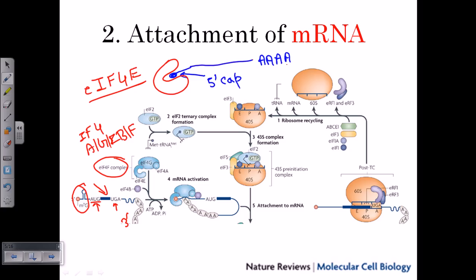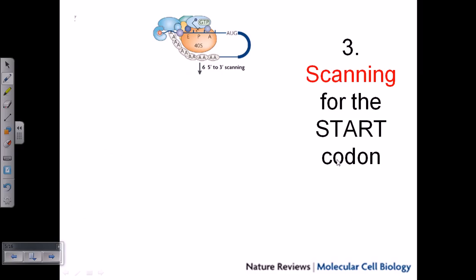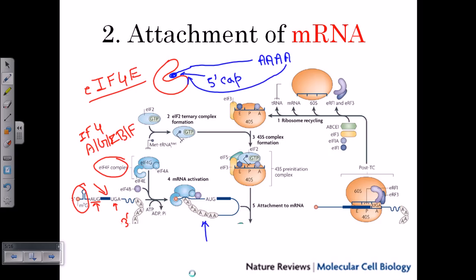The poly-A tail is folded back to form a loop-like structure, and this is very important. The loop will not start translation on its own — translation only starts once this loop is opened. This loop is formed due to the eIF4F complex. Once this is in place, it will attach to the 43S pre-initiation complex, completing the second stage of mRNA attachment.